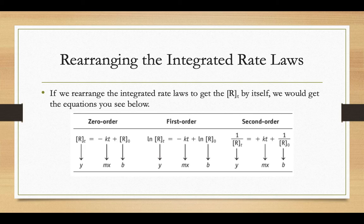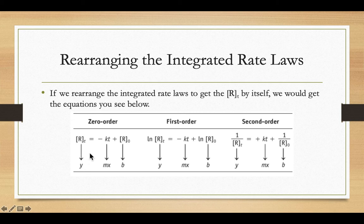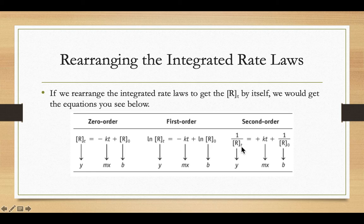The second order is where we have the inverse of R(T). If we graph each of these equations, the y-axis on the zero order graph is going to be just concentration. The y-axis for a first order reaction is the natural log of our concentration. And for the second order reaction, the y-axis will be labeled as the inverse of our concentration at some time T.